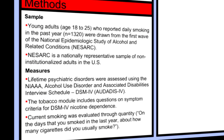In the measures portion of the methods section, describe the measures — that is, variables or survey items — for your participants or observations. This is a very brief but successful measures section.